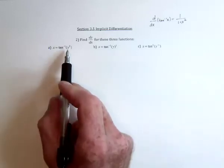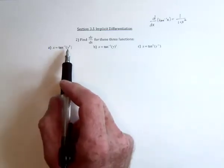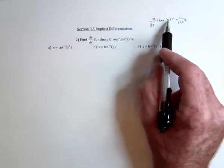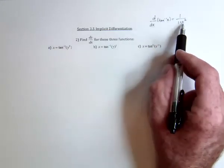Well, instead of an x, we've got a y squared. So this is saying whatever you've got right there, you've got to square it right there. So we're actually going to get 1 plus y to the fourth.